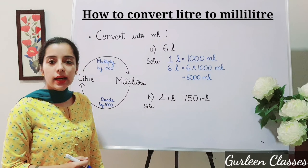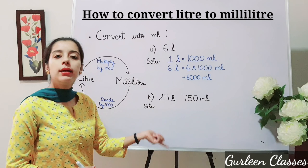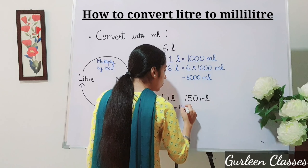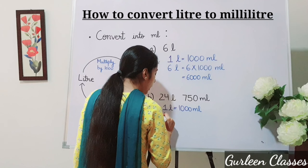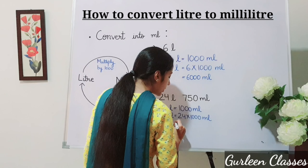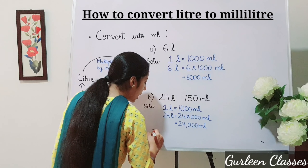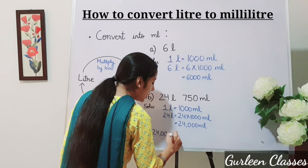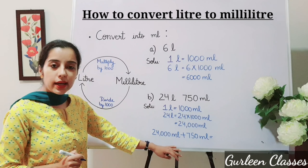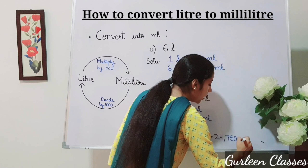Part B: 24 liter and 750 milliliter. First, we will convert liter to milliliter. One liter is equal to one thousand milliliter, so twenty-four liter is equal to twenty-four into one thousand, that is twenty-four thousand milliliter. Now we add: twenty-four thousand milliliter plus seven hundred fifty milliliter equals twenty-four thousand seven hundred fifty milliliter.